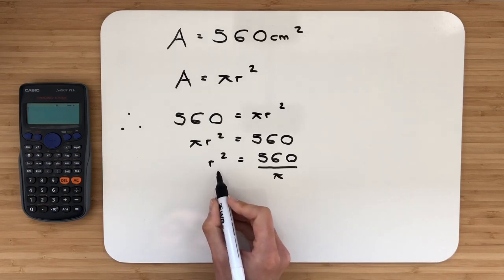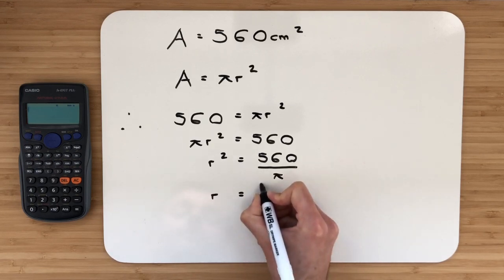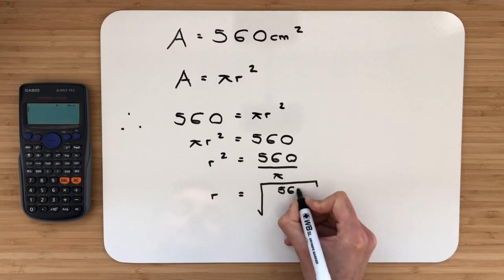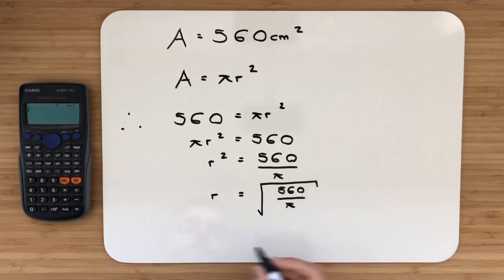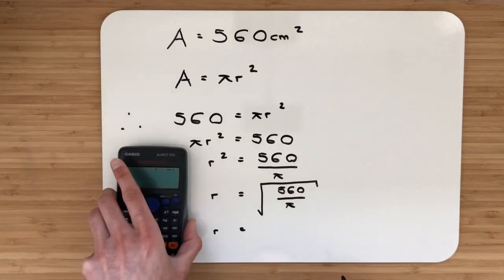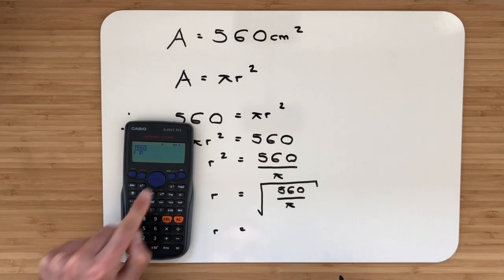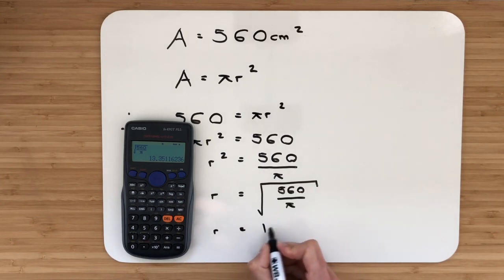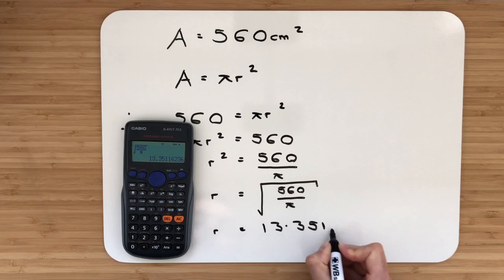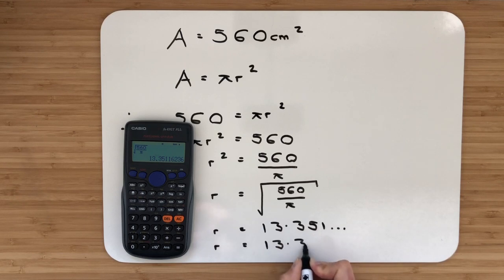If you think back to Pythagoras, the opposite of squaring something was taking the square root. So the radius will be equal to the square root of 560 over π. Make sure your square root sign is over the full entire fraction. Let's go to our calculator. We'll hit our square root button first, then our fraction button. So that will be 560 and then π. That will come out as 13.351 and it continues on. So it is 13.35 centimetres.